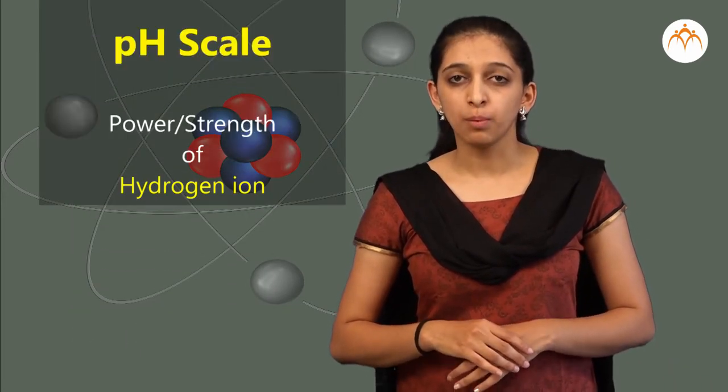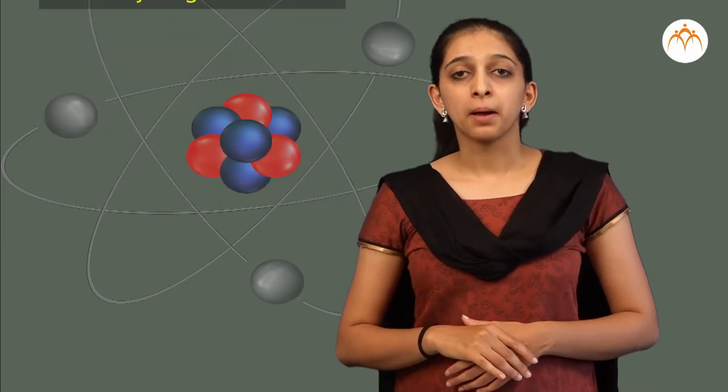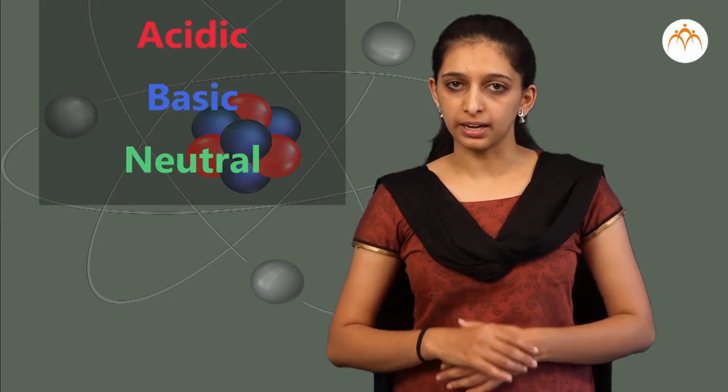Scientist Sorensen introduced a new scale to measure H+ ion concentration and it is called pH scale, i.e. power or strength of hydrogen. By using this scale we can classify substances into acidic, basic, or neutral categories.